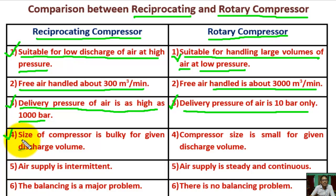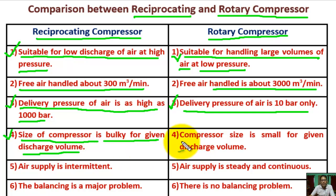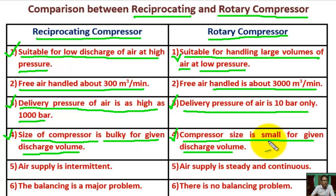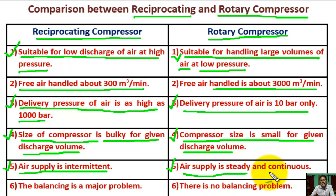Point 4: For reciprocating compressor, the size of the compressor is bulky for a given discharge volume. For rotary compressor, it is compact in design. Point 5: For reciprocating compressor, the air supply is not uniform. For rotary compressor, the air supply is steady and continuous.